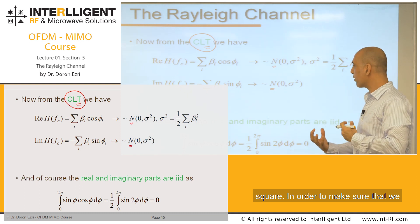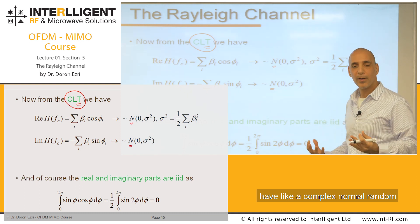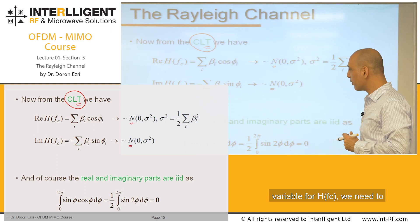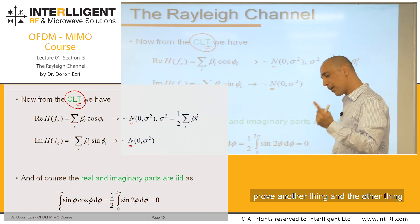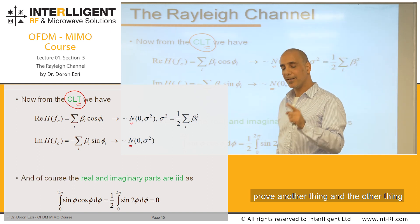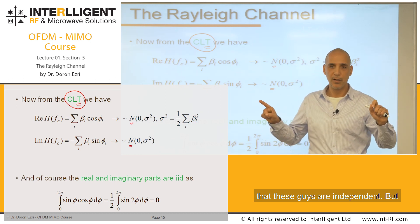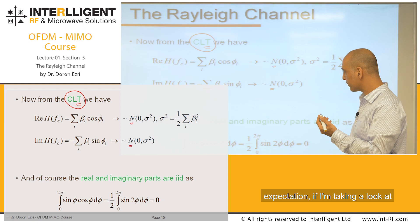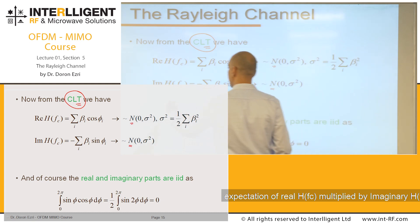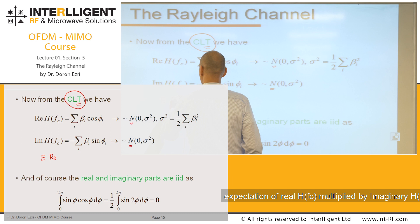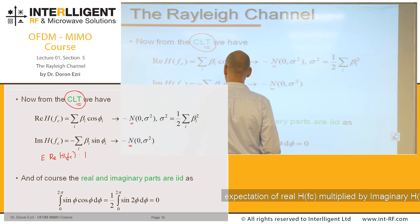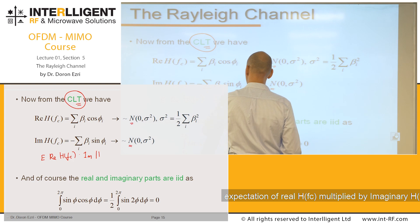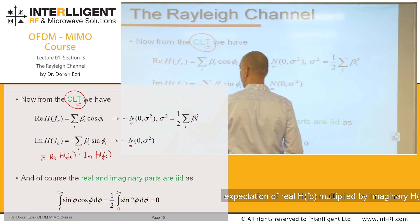In order to make sure that we have a complex normal random variable for H(fc), we need to prove another thing. And the other thing, that these guys are independent. But of course, if I'm taking a look at the expectation of real(H(fc)) multiplied by imaginary(H(fc))...